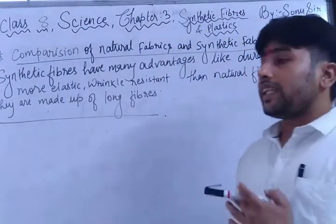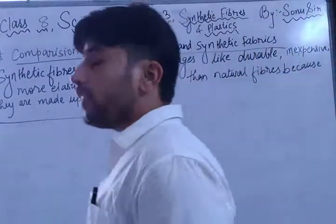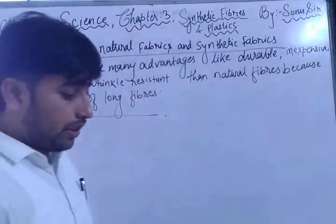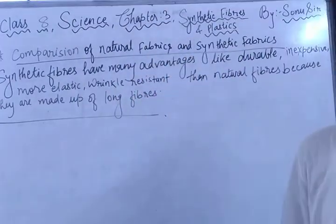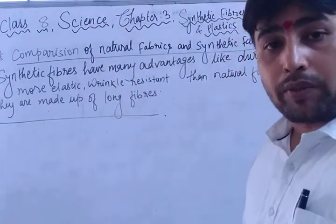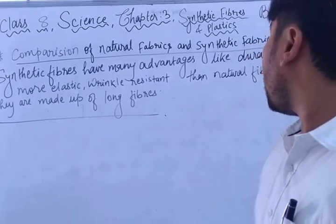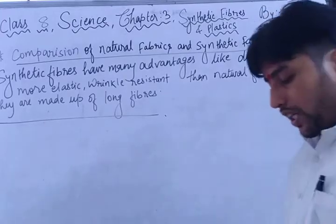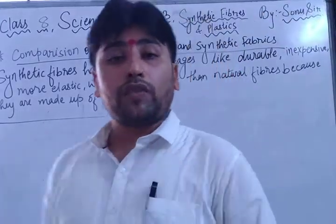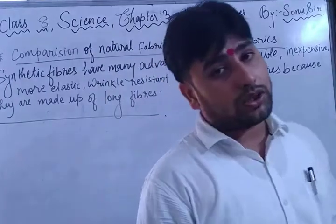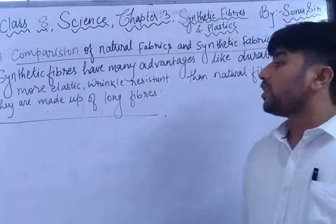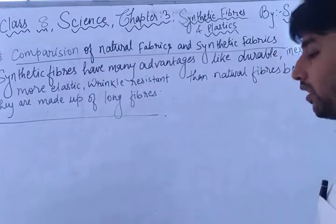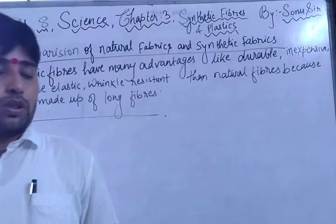Natural fibers being short is one demerit, while synthetic fibers can be obtained in long form. The advantages — the good qualities — of synthetic fibers include: they are very durable, lasting two, three, four, five years or more. They are also inexpensive; to obtain natural fibers we have to spend a lot of money, but synthetic fibers are cheaper. They are more elastic and can be stretched more.